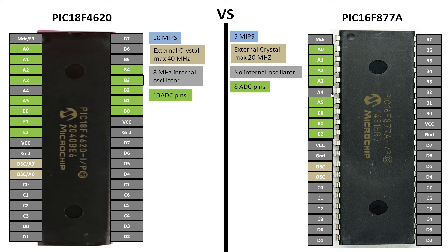On the PIC16F877A: A0, A1, A2, A3 — A4 is not an ADC pin — A5 is an ADC pin, then E0, E1, and E2, giving us a total of 8 ADC pins. Apart from this, both microcontrollers have a very powerful ADC module with up to 10 bits of ADC resolution.